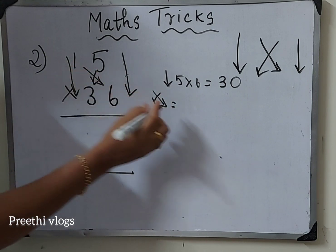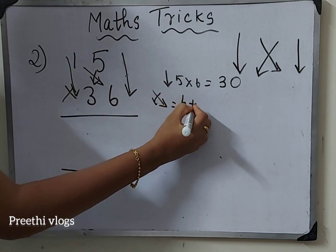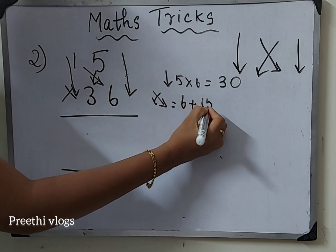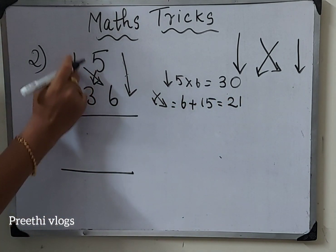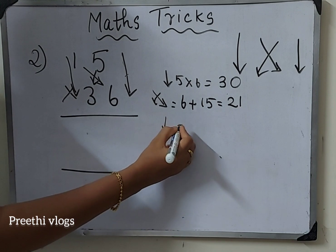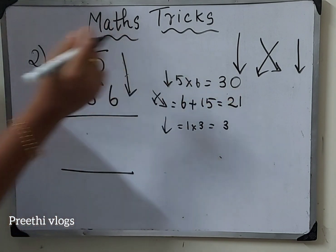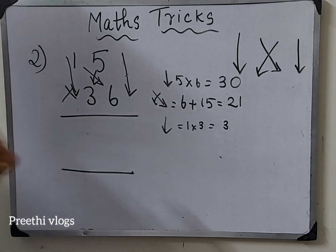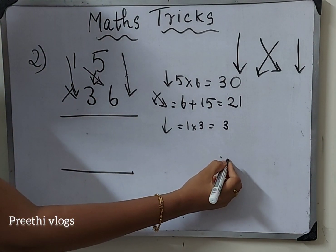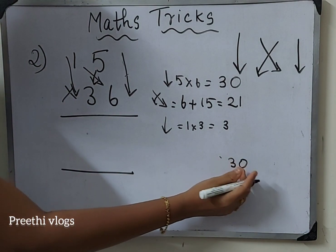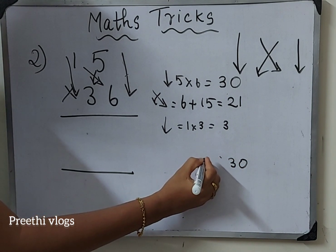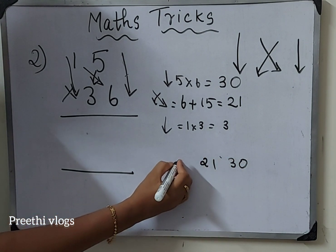Cross arrow mark: 6 into 1 is 6, plus 5 into 3 is 15. So here we have 2 to add 10, making 21. Then down arrow mark, right side number: 1 into 3 equal to 3. Now we have 3 numbers. We will find the answer number: 30, 21, then 3.